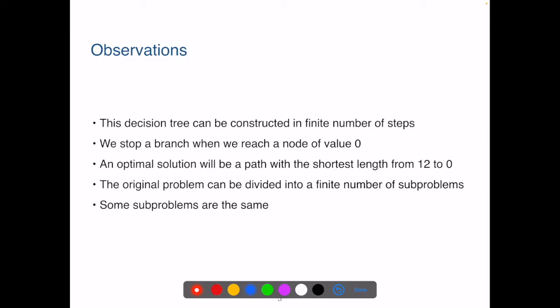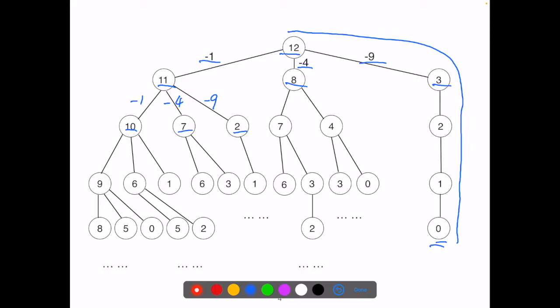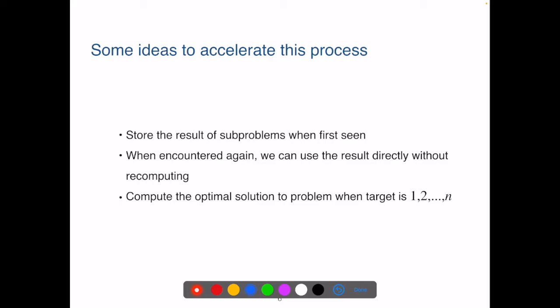Although the tree can grow very large, there are a limited number of sub-problems and many of them actually repeat. If we look at this decision tree again, we notice that the sub-problem 8 appears here and also here. The sub-problem 7 appears here, here. And the sub-problem 6 appears here, here, here. So a lot of those sub-problems repeat. That's another important observation.